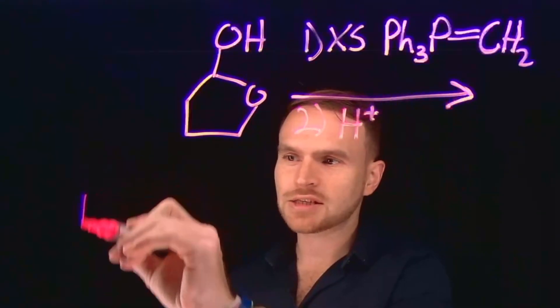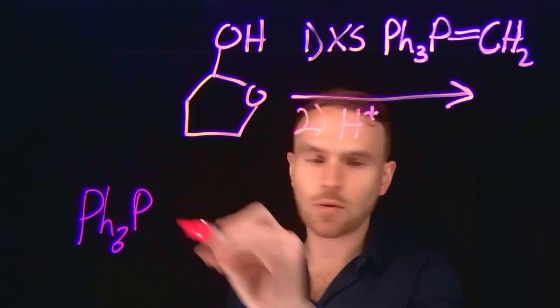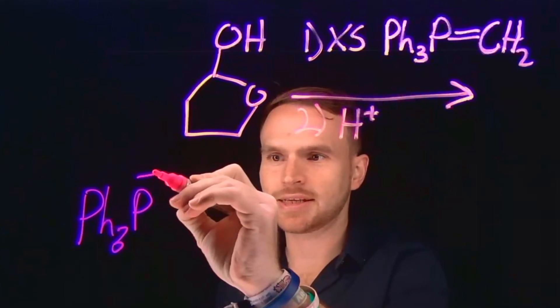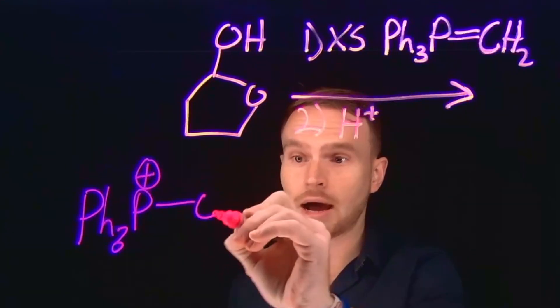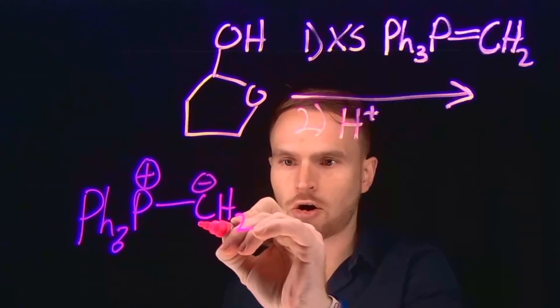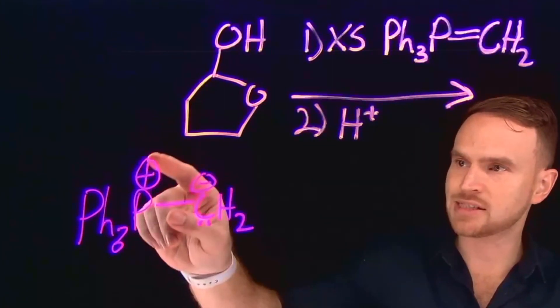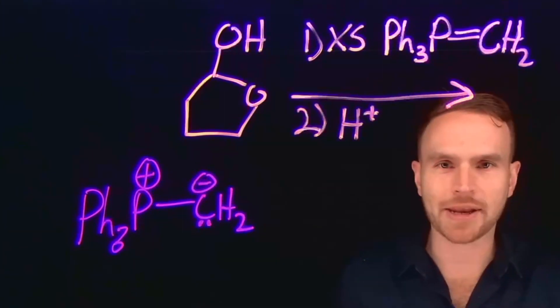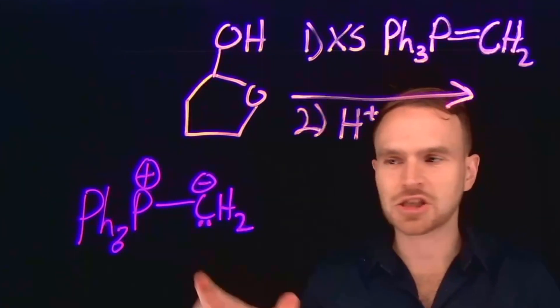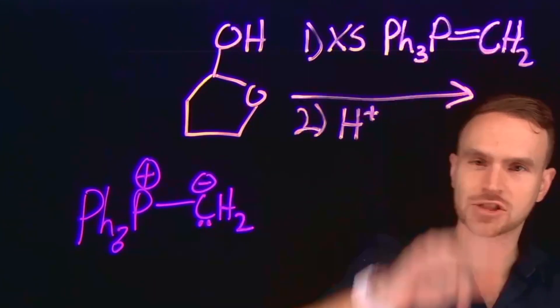Remember that another way to draw a Wittig reagent is what is called an ylide. So an ylide is anytime you have two adjacent atoms that have opposite charges. And in this case, what you have is the carbon has a lone pair and the phosphorus ends up being positively charged with the carbon acting as an anion. And this is just a different resonance form of this Wittig reagent here where there is a phosphorus to carbon double bond.